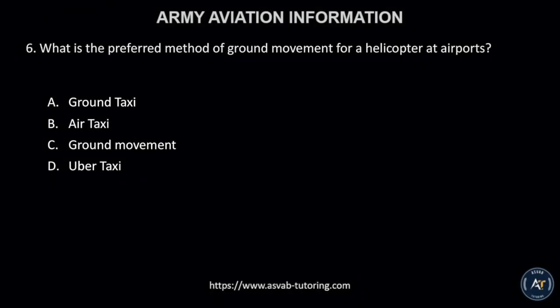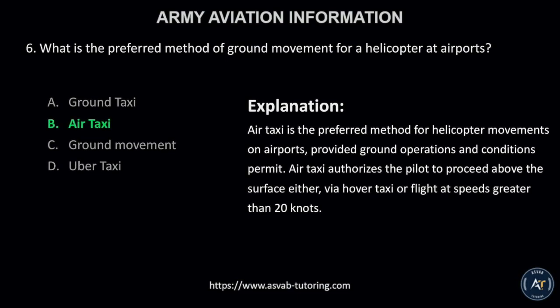Number 6. What is the preferred method of ground movement for a helicopter at airports? The correct answer is letter B, air taxi. Air taxi is the preferred method for helicopter movements on airports, provided ground operations and conditions permit. Air taxi authorizes the pilot to proceed above the surface either via hover taxi or flight at speeds greater than 20 knots.